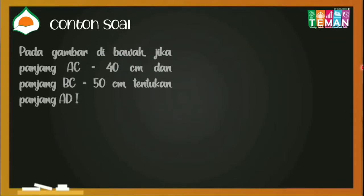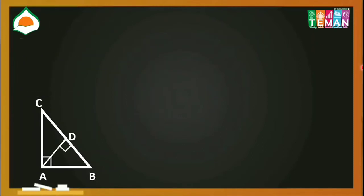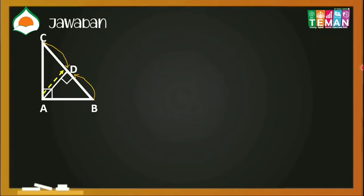Kita akan ke contoh soal ya, teman-teman. Contohnya sebagai berikut. Kita diminta mencari berapa nilai AD. Baik, kita gambarkan terlebih dahulu segitiga siku-sikunya. Lengkap dengan rumus air mancurnya ya, teman-teman. Lalu kita masukkan nilainya. AC-nya 40, BC 50. Kita mau mencari AD.